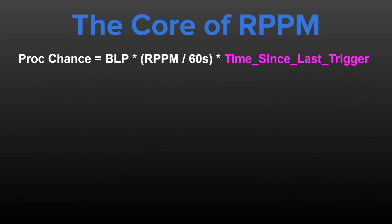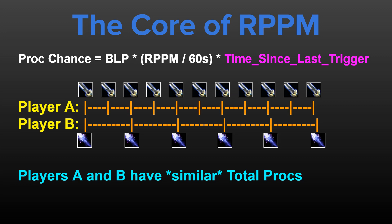At its core, it does this by determining your proc chance per triggering event based on the amount of time that has passed since your last triggering event, where the triggering event is often, but not always, damage dealt or on ability cast. So let's say two players were using an effect that has approximately two procs per minute triggered on damage done. Player A swings a sword at an enemy once every one second, while Player B is casting a Frostbolt at an enemy every two seconds. The RPPM system is going to give Player B twice the chance to proc per hit relative to Player A, since they have twice as many hits — and as such, both players gain almost the same amount of procs from this system.